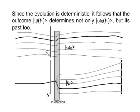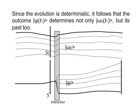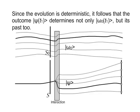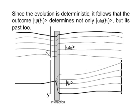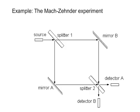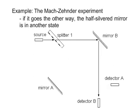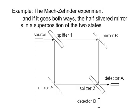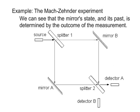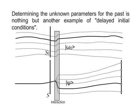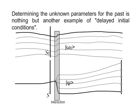Since the evolution is deterministic, it follows that the outcome ψ of t1 determines not only ω0 of t1, but its past as well. If the photon goes one way, the half-silver mirror is in one state. If it goes the other way, the half-silver mirror is in another state. And if it goes both ways, the half-silver mirror is in a superposition of the two states. We can see that the mirror state and its past is determined by the outcome of the measurement. Determining the unknown parameters for the past is nothing but another example of delayed initial conditions.